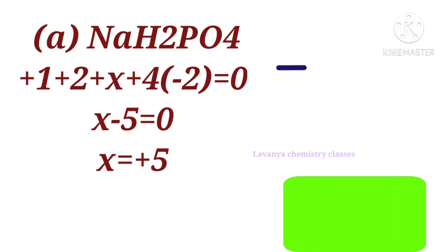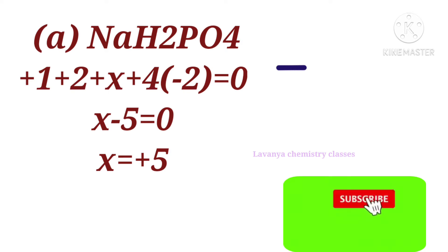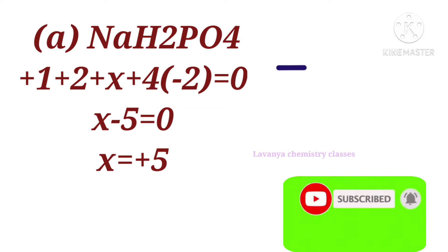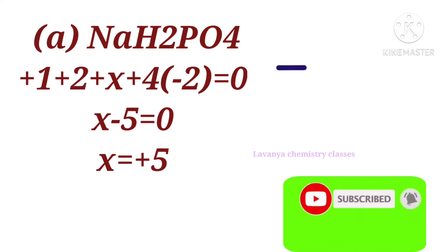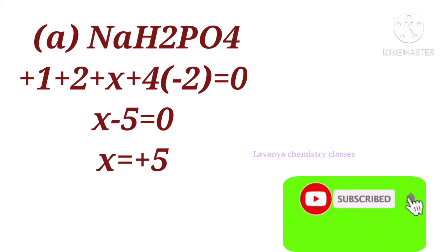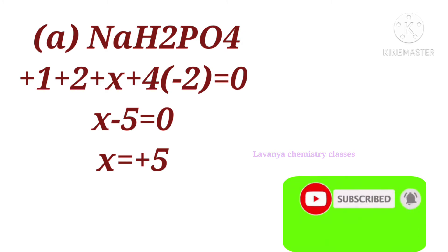The molecule is NaH₂PO₄. The oxidation number of sodium is +1. Hydrogen is +1, and two hydrogens are given, so 2×(+1). Phosphorus is x. There are 4 oxygen atoms, each with oxidation number −2, so 4×(−2). Setting the sum equal to zero, the oxidation state of phosphorus is +5.